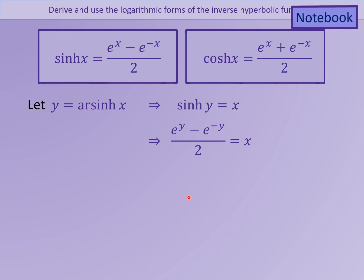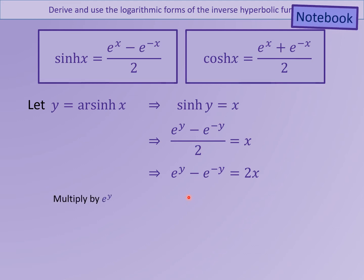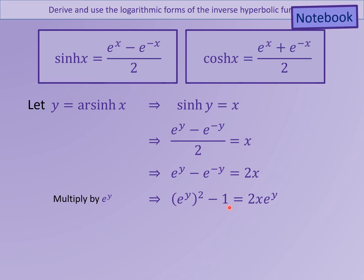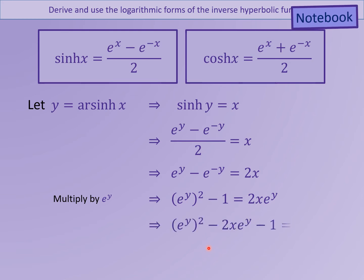The right-hand side is still just x. We can now multiply both sides by 2. Because we have positive and negative powers of e to the y, we can now multiply both sides by e to the y, giving us e to the 2y, which is also the same as e to the y squared. This part becomes minus 1 because this is e to the minus y multiplied by e to the y, which is e to the 0. The right-hand side becomes 2x e to the y. If we now take this all to one side, we can see that this is a quadratic equation in e to the y, so we can solve this using the quadratic formula.